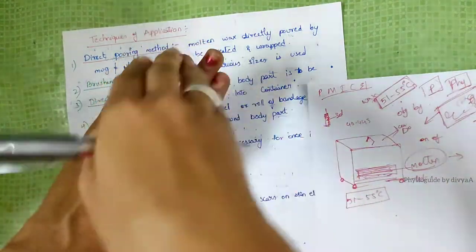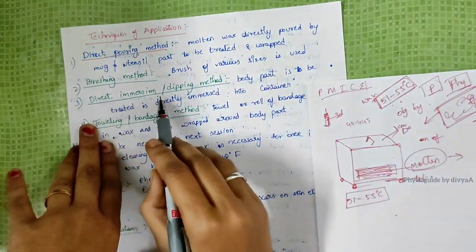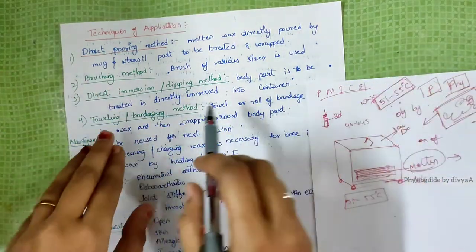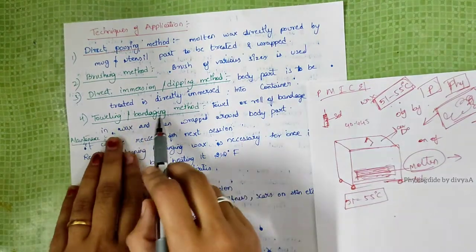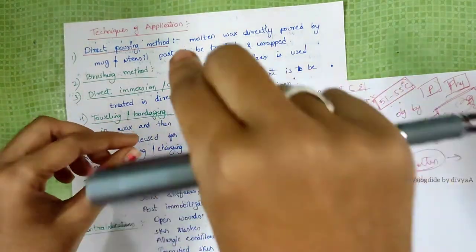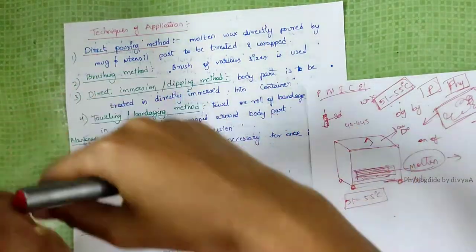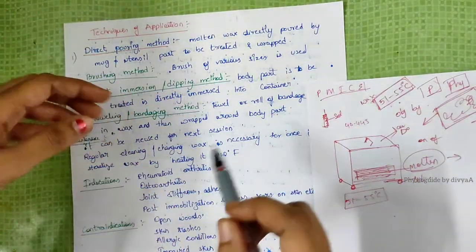Direct immersion and dipping method - the part to be treated is directly dipped into the container. Toweling or bandaging method - dip a towel, squeeze it, and wrap the towel around the body part.